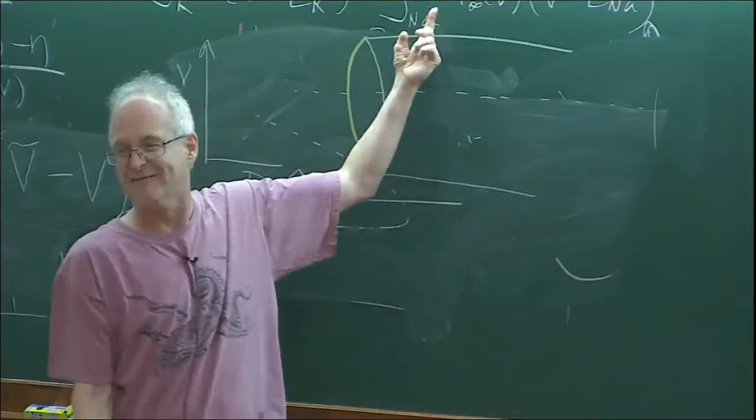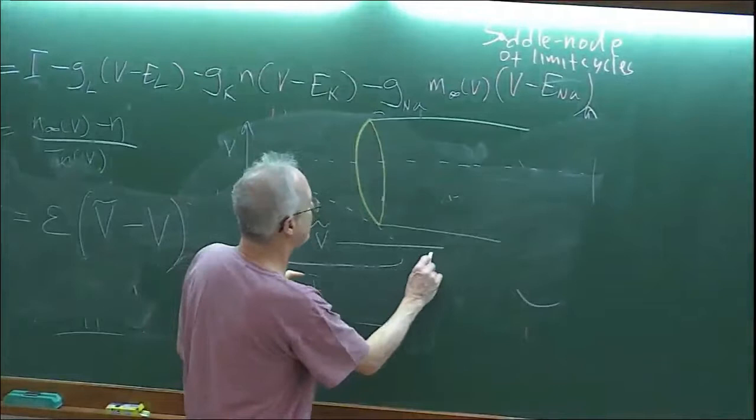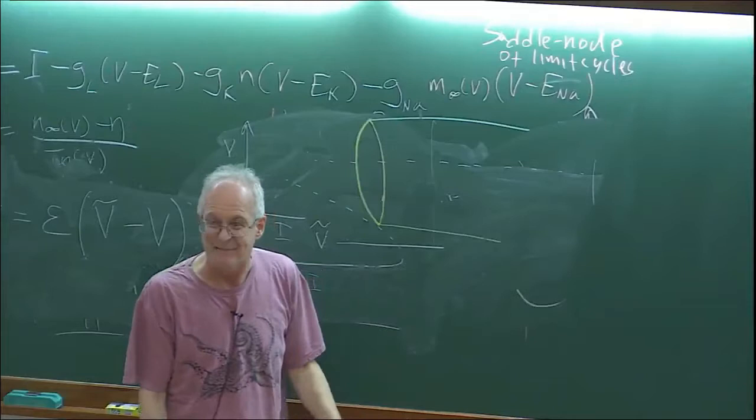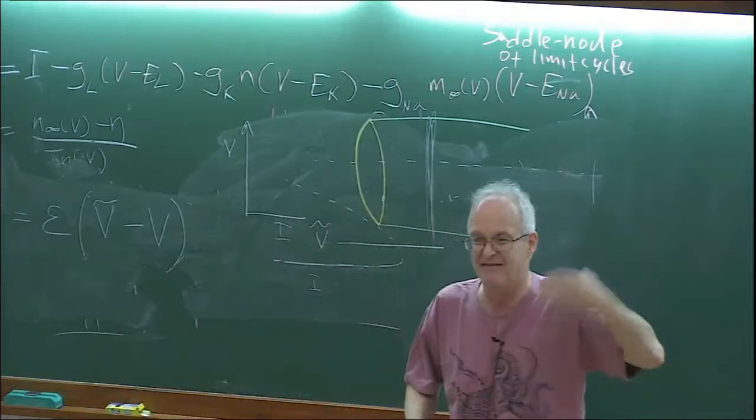So now V is going to jump up to here — it has to, because there's nowhere else to go. Now you're going to start to spike periodically, because that's the limit cycle.